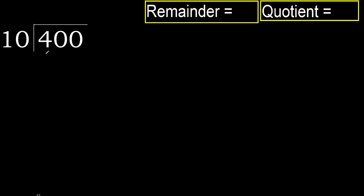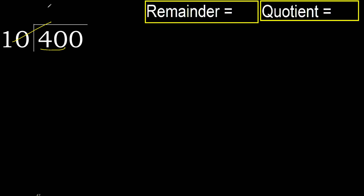400 divided by 10. 40 is less, therefore next. 40 is not less, therefore with 40. 10, multiply by which number is nearest?